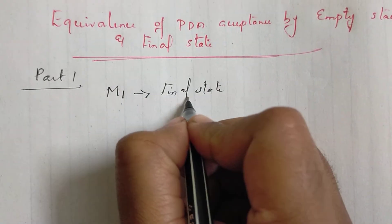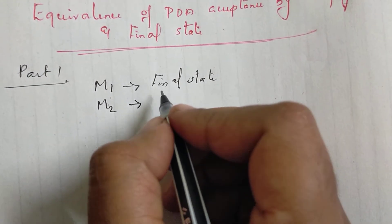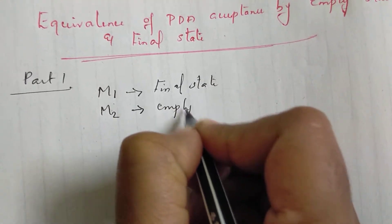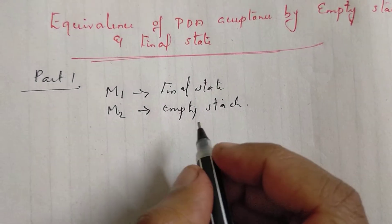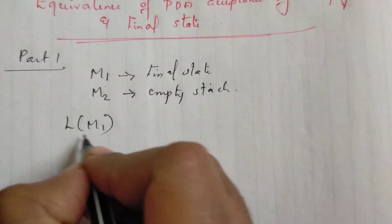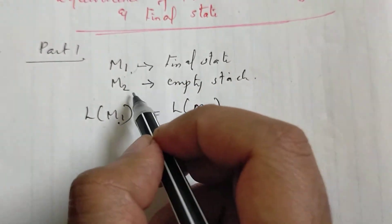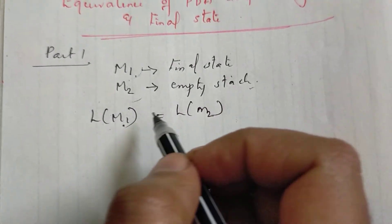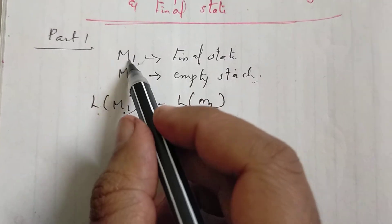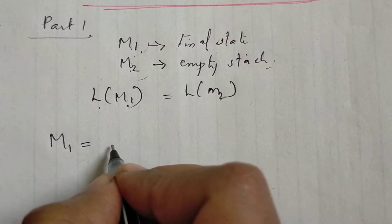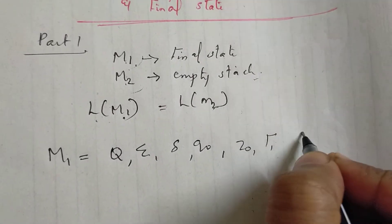In the first part of this proof, we call M1 a machine that is a PDA accepting by final state. M1 accepts a string in the final state. We call M2 a machine that accepts a string by reaching empty stack.